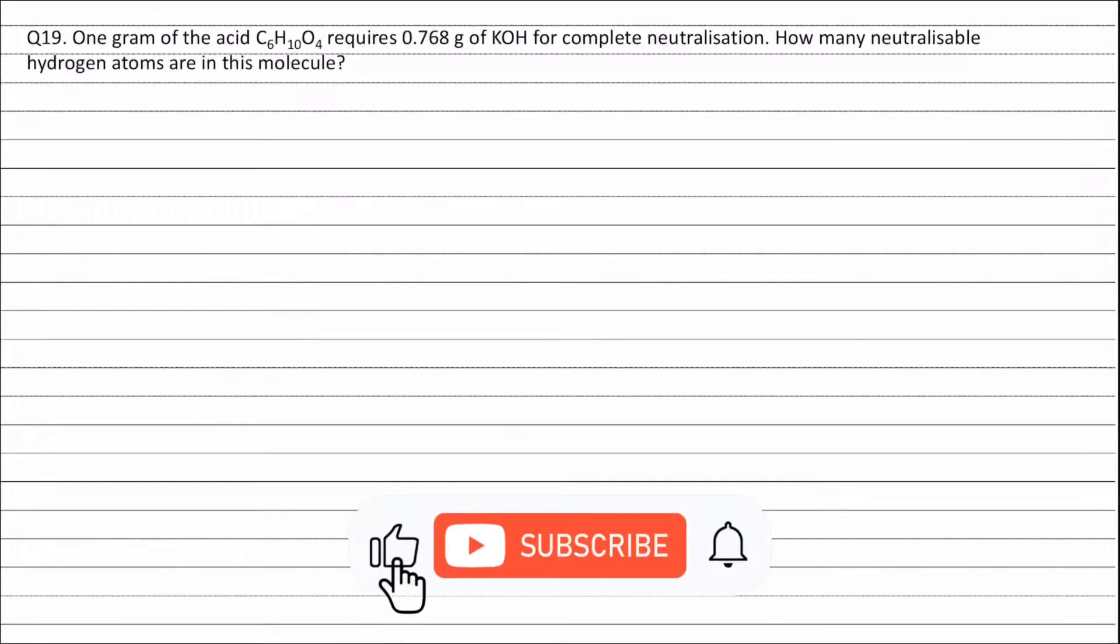Question 19. One gram of the acid C6H10O4 requires 0.768 gram of KOH for complete neutralization. How many neutralizable hydrogen atoms are in this molecule?